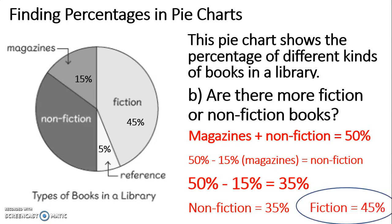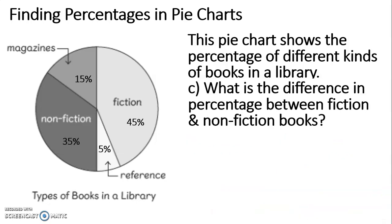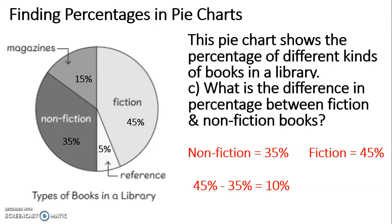On to C — what is the difference in percentage between fiction and non-fiction books? Non-fiction books are 35%, fiction books are 45%. 45% subtract 35% will give us the difference, and the difference there is 10%. So the difference between the two is 10%.